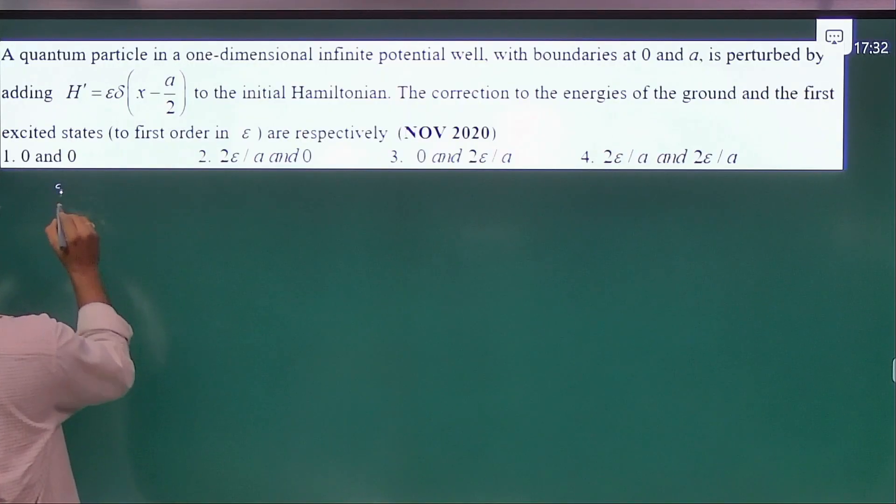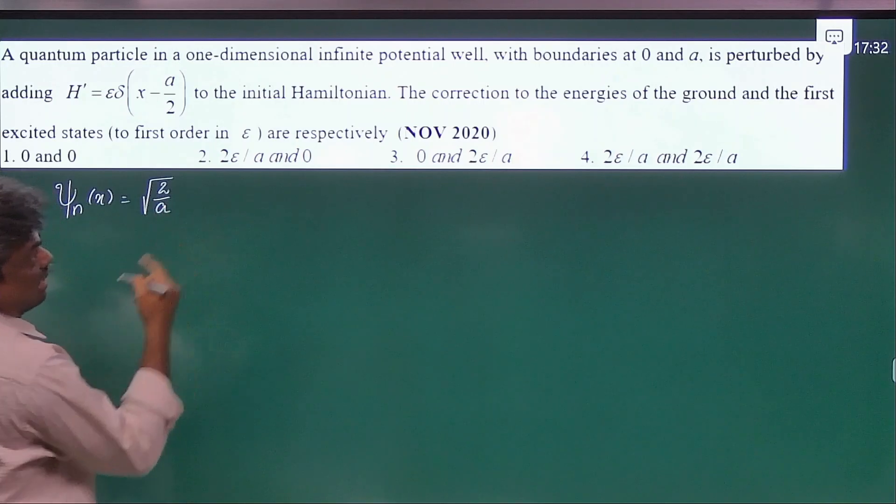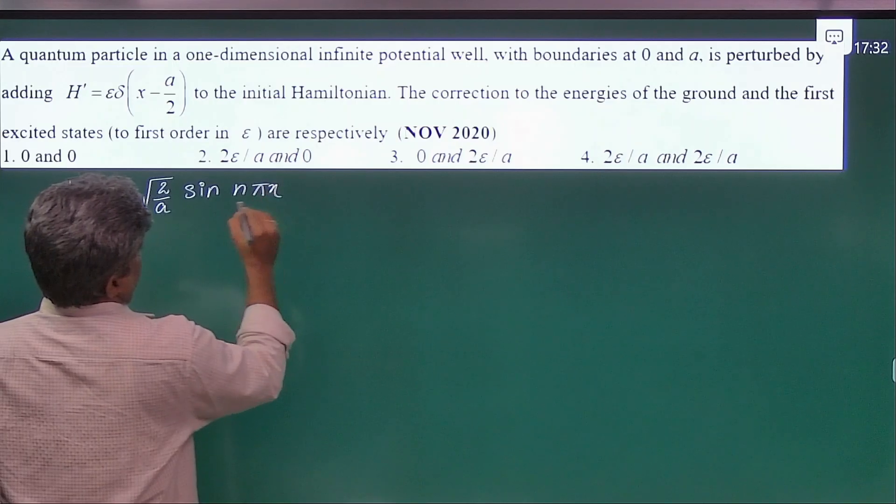So now I'm taking psi n of x. That is root 2 by a, where a is the length of the box, sin n pi x by a.